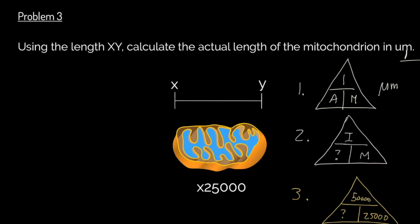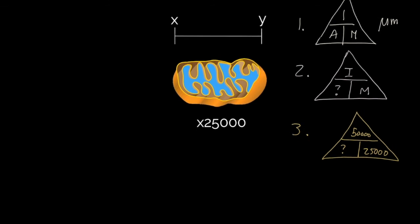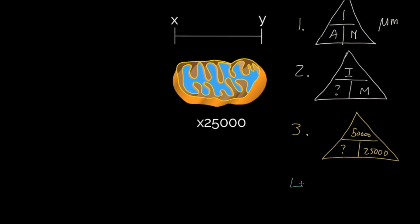Now, we could use the calculator at this point, but of course we simply need to calculate. And in this scenario, we have a calculation of 50,000 divided by 25,000, which gives us an actual size of this object. Remember, this is the actual length of a mitochondrion as two micrometers. So two one-thousandths of a millimeter, a tiny structure. And as you recall from previous studies, these mitochondria, which are found commonly in animal and plant cells.